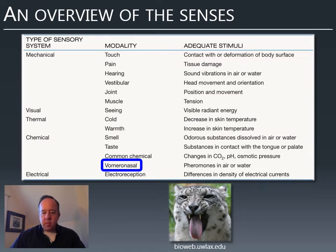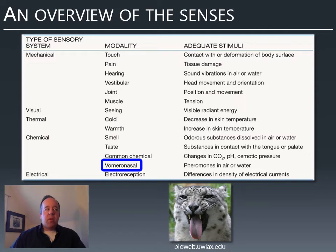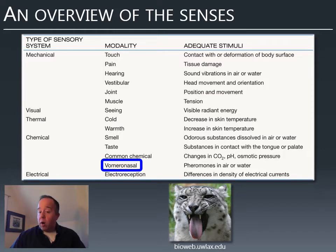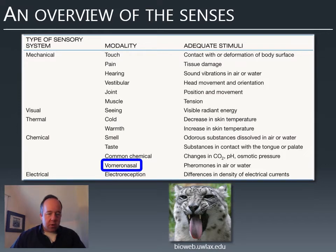The vomeronasal sense — if you've ever heard of pheromones, that is what the vomeronasal sense detects. It is a matter of ongoing debate whether humans have a vomeronasal sense. The organ that in most mammals detects pheromones seems to be dormant in humans, but we may detect pheromones with our usual sense of smell even if we're not aware of it. Other animals are highly sensitive to pheromones and have specific behaviors triggered by them.